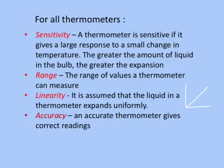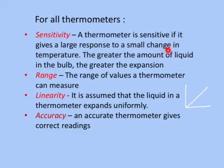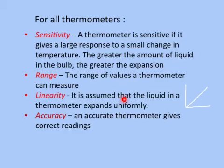It is important to know the meaning of these words in relation to thermometers. Sensitivity is different from fast response — it means a thermometer is sensitive if it gives a large response to a small change in temperature. The greater the amount of liquid in a bulb, the greater the expansion, and therefore the greater the sensitivity. Range means the range of values a thermometer can measure. Linearity means it is assumed that the liquid in the thermometer expands uniformly — a straight line.